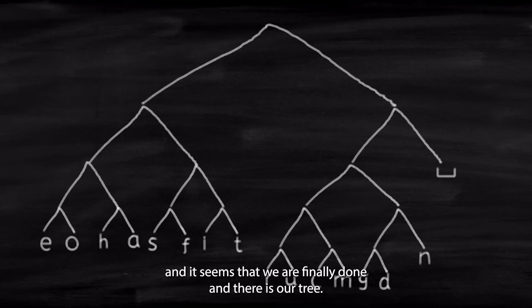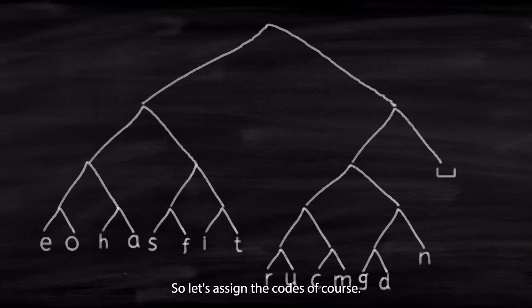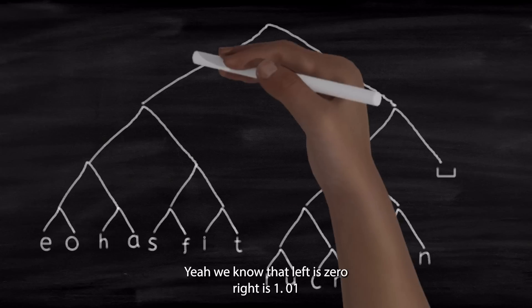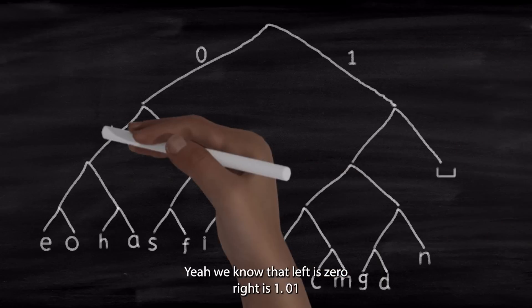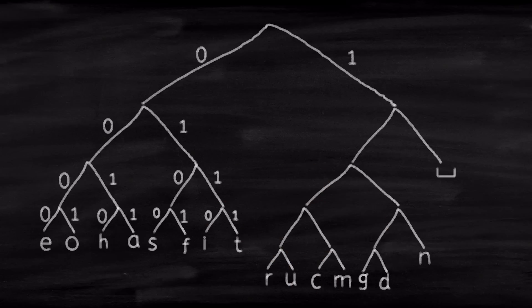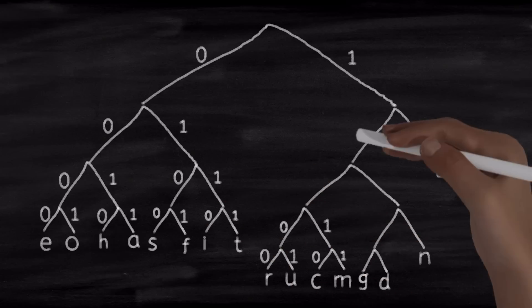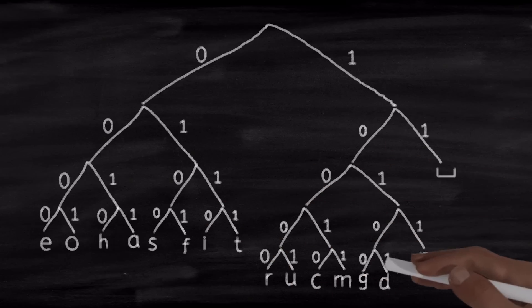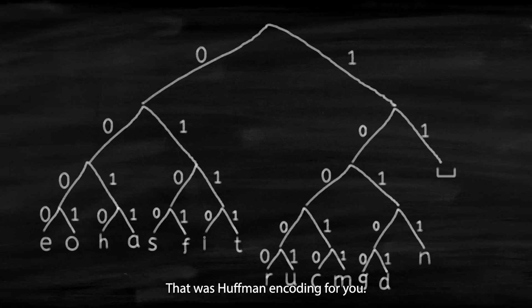So let's assign the codes. Of course, we know that left is zero, right is one, zero, one. And there you go. That was Huffman encoding for you. I hope you enjoyed it and see you next time.